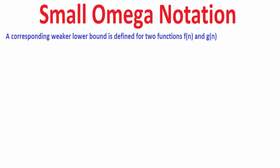Today we will be learning about the small omega notation. It is a corresponding weaker lower bound that is defined for two functions f of n and g of n.